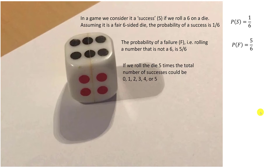Suppose we roll the die five times. Then the total number of successes could be zero, one, two, three, four, or five. We want to know the probability of each of these different outcomes.